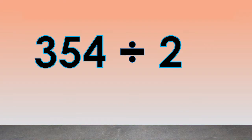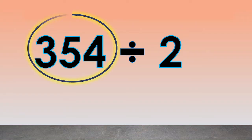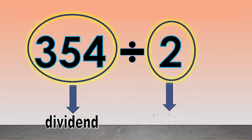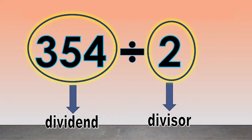Let's answer this: 354 divided by 2. Here, 354 is what we call the dividend. The number 2 is what we call the divisor. First, write the problem using a long division symbol like this.